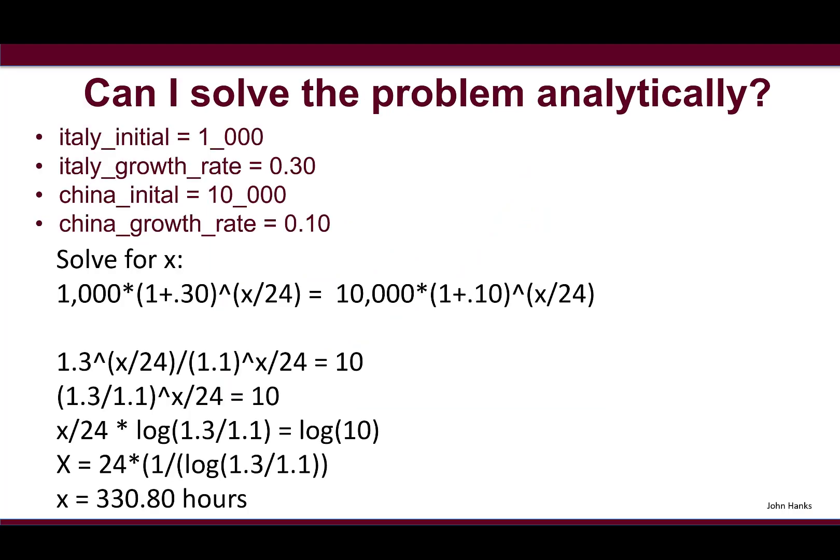Could we solve this problem analytically? I think if I gave this to you as an SAT question, you probably would have solved it. I'm going to look at the Italy numbers. In my code I often use an underscore because once you get to a huge set of numbers in Python, you don't have commas. I use an underscore for a comma.